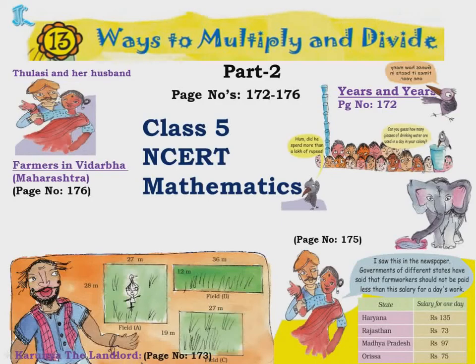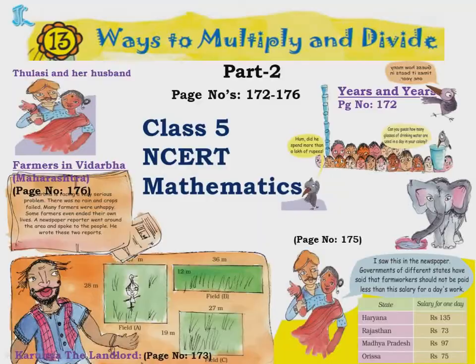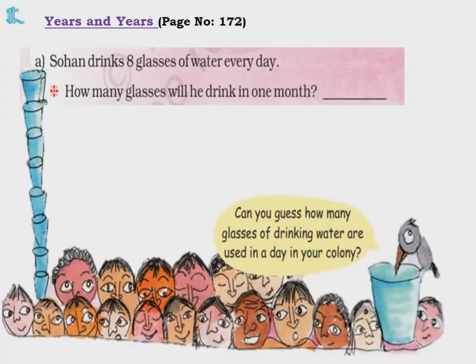Welcome to Class 5 NCERT Mathematics Chapter 13, Ways to Multiply and Divide, Part 2. In this part we'll go through page numbers 172 to 176. Children, let's start. Page number 172.